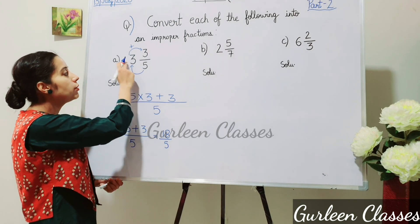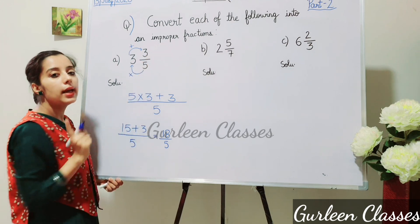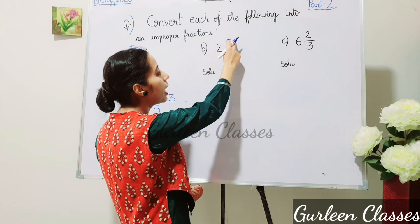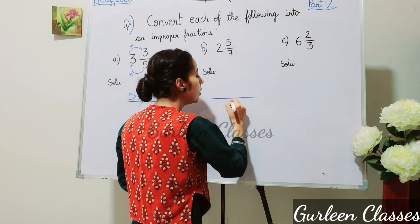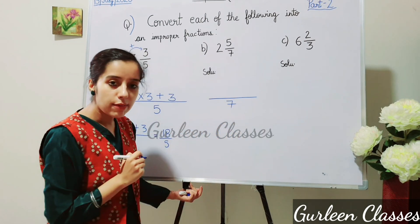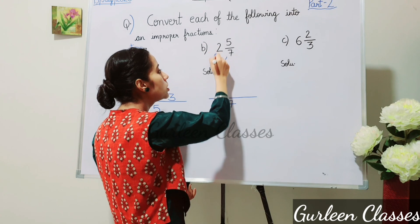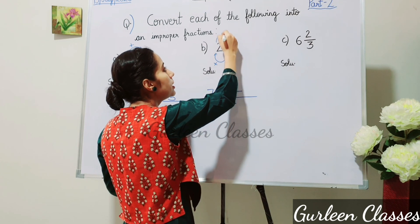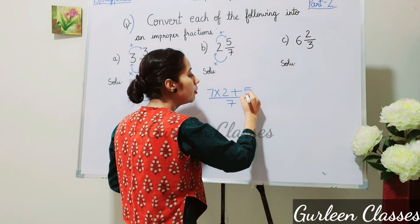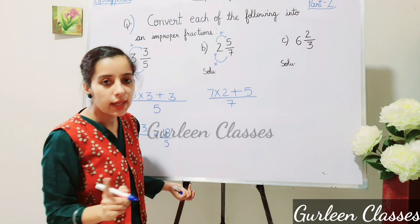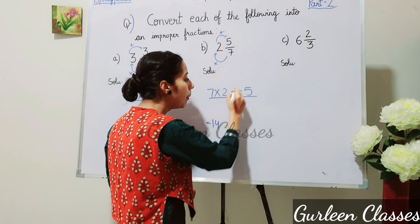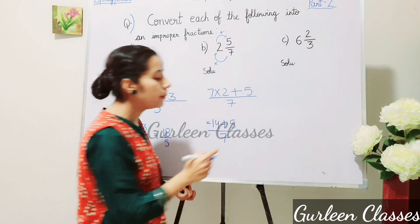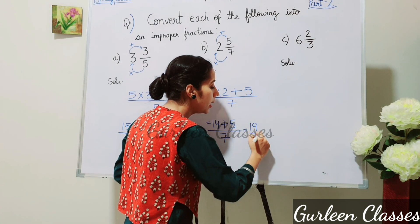Let us check: 5 threes are 15, plus 3 equals 18, so 18/5. Now part B: 2 whole 5/7. The denominator is 7. Multiply: 7 × 2 = 14. Add the numerator 5: 14 + 5 = 19. So the answer is 19/7.